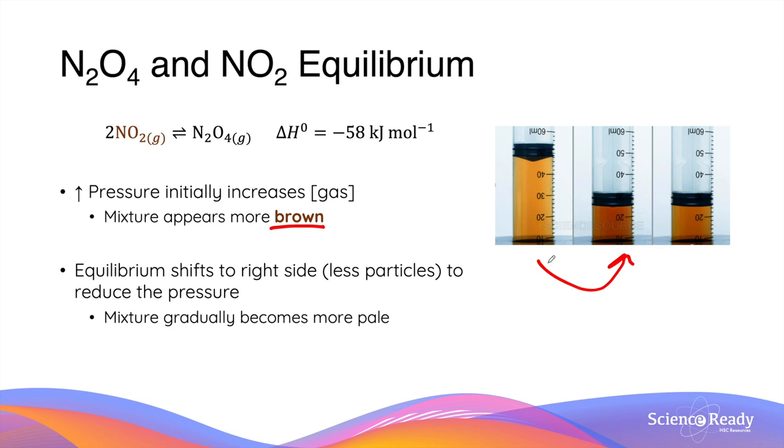However, if you wait a few seconds and watch what happens to the color, the brown color of the syringe will slowly become less and less brown. This is due to the movement of equilibrium position. The equilibrium will shift to the right side of this reaction, which has less gas particles. We've got two gas molecules on the left-hand side and only one on the right-hand side. As the equilibrium moves to the right side, which has less particles, the pressure of the system is therefore reduced.